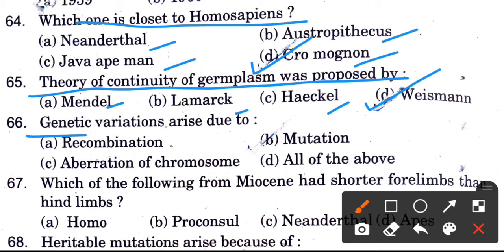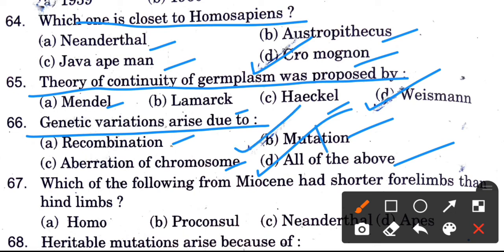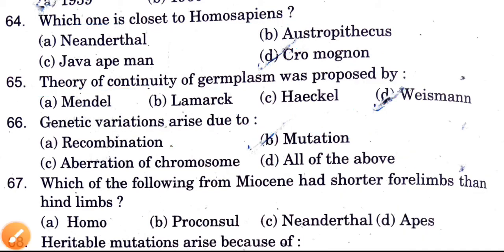Genetic variation arises due to — options are combination, mutation, aberration, chromosome, and all of the above. The answer should be mutation, though all of the above is also considered.